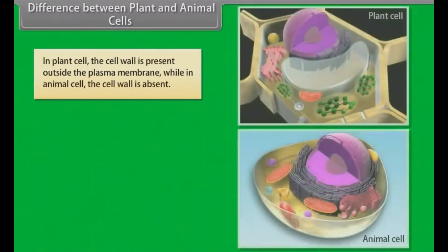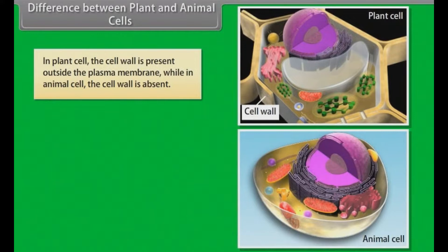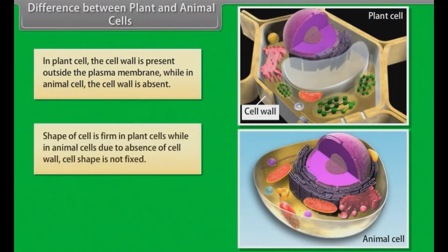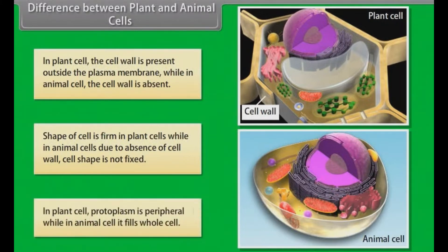In plant cells, the cell wall is present outside the plasma membrane, while in animal cells, the cell wall is absent. The shape of the cell is firm in plant cells, while in animal cells, due to the absence of a cell wall, the cell shape is not fixed. In plant cells, protoplasm is peripheral, while in animal cells, it fills the whole cell.